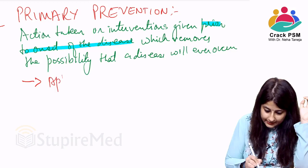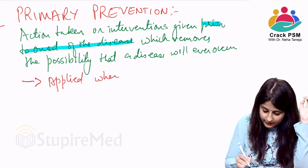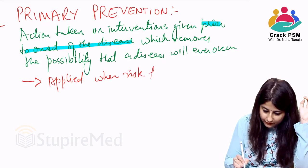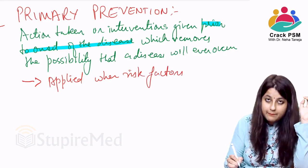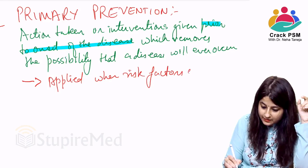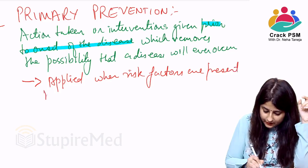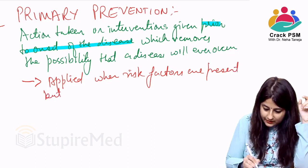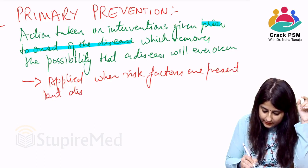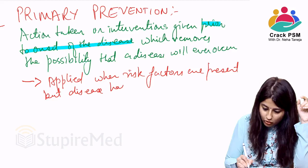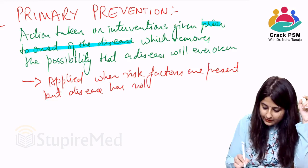In other words, primary prevention is applied when risk factors are already present but the disease has not yet taken place.